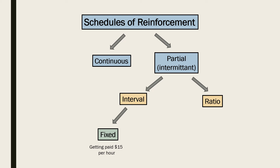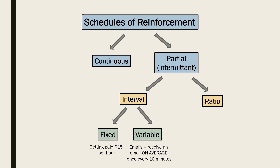Using a fixed interval schedule, response rates remain fairly steady but start to increase as the reinforcement time draws near, then slow immediately after reinforcement is delivered. In a variable interval schedule, reinforcement is given after an unpredictable amount of time has passed, providing one correct response has been made — for example, on average every five minutes. An example is a self-employed person being paid at unpredictable times, or receiving an email on average once every 10 minutes.